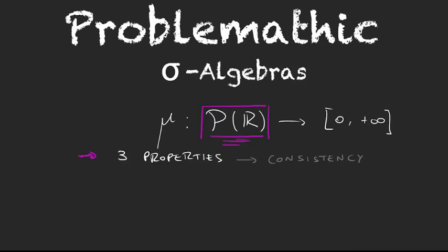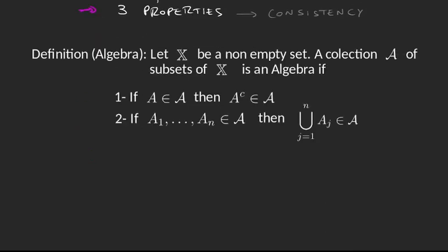Before going straight to sigma algebras, let's start with a more basic structure called an algebra. We have a non-empty set — let's call it X — which is the space we will be working in. For example, last video we said it was going to be ℝ, but it could be just any set. We say that a collection A of subsets of X — so A is a subset of the power set of X — is an algebra if it satisfies these two properties.